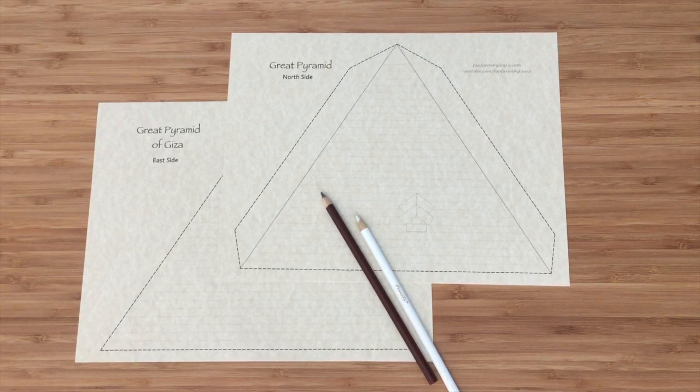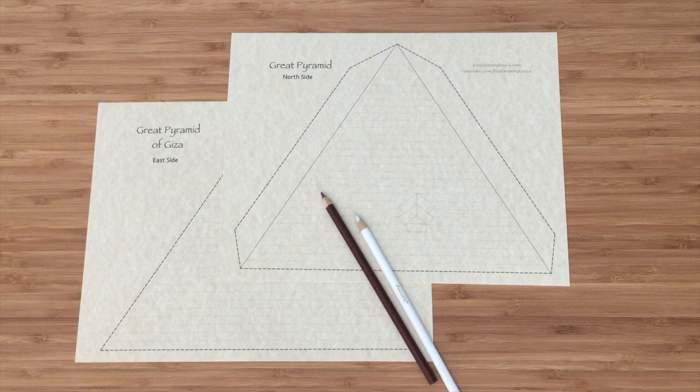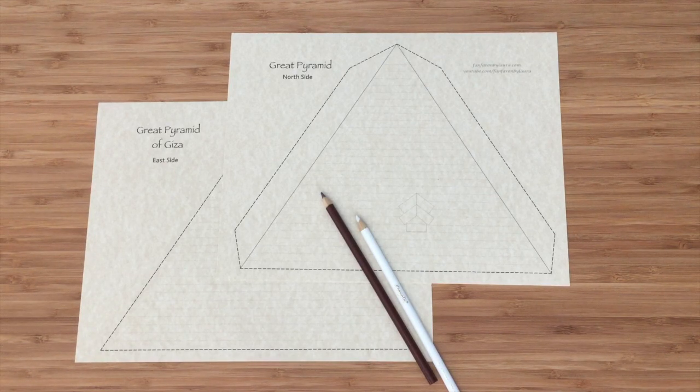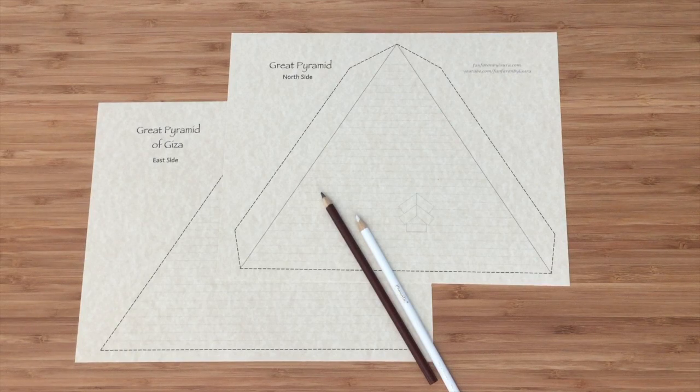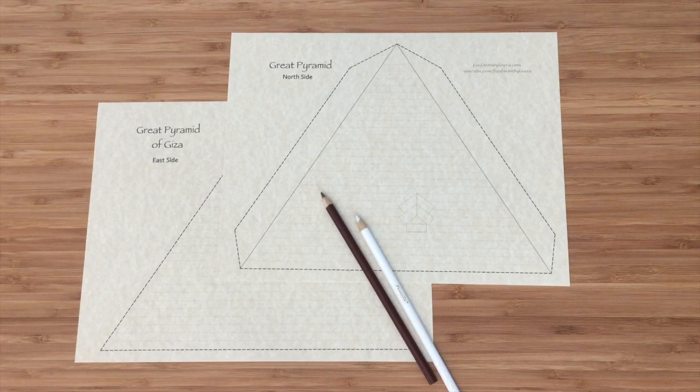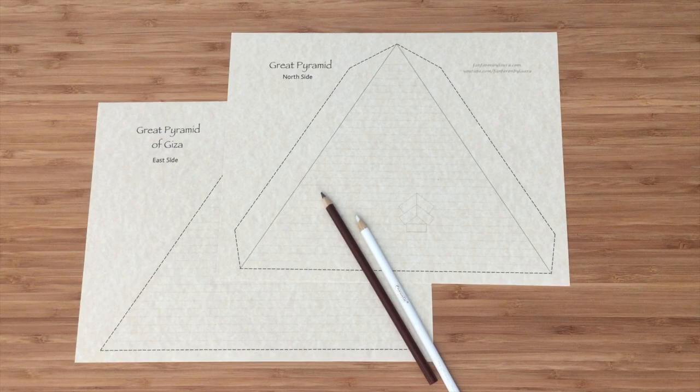If you want to color your pyramid, do that now. I didn't color mine because I chose to print it on some tan colored paper so that it would look similar to what the pyramids look like today. Back when the pyramids were first created, they were probably covered in polished limestone, so they would have been shiny and maybe a little bit lighter than what you see today.